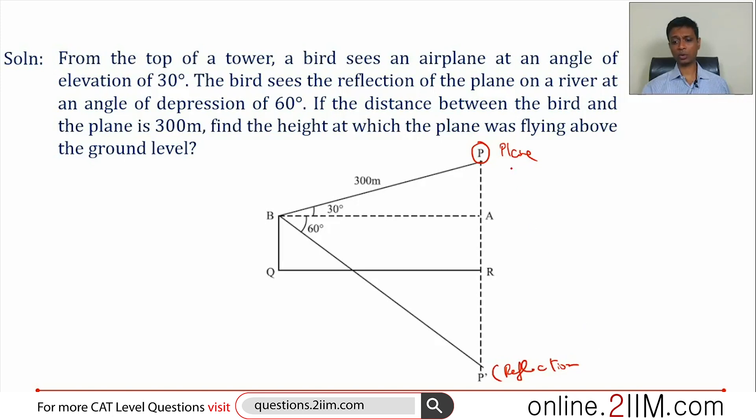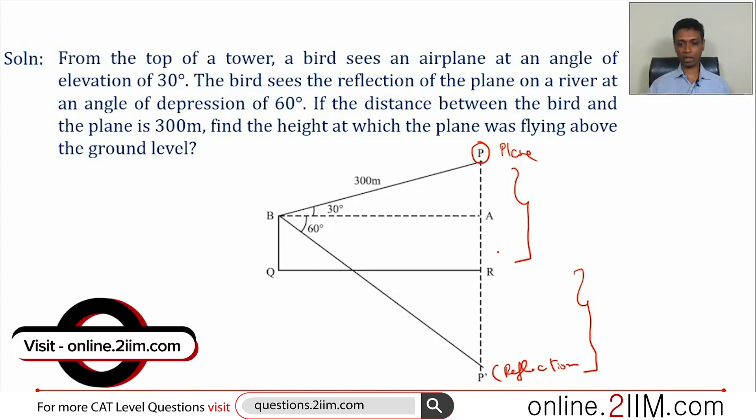The first thing we know is PR equals RP'. Reflection on a simple reflecting surface - the height above the river and the distance of the reflection below the river should be equal. So we need to find PR. This distance is what we need to find.